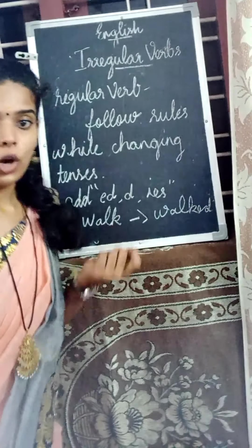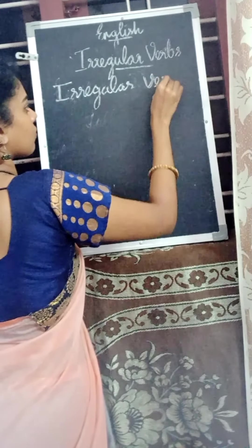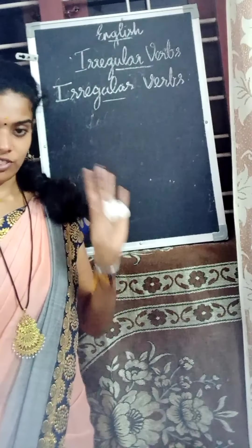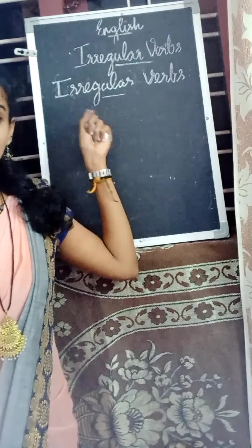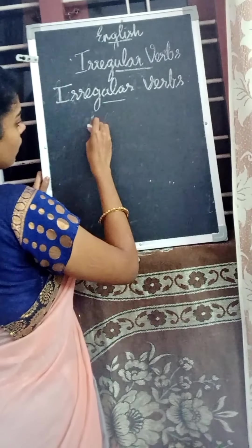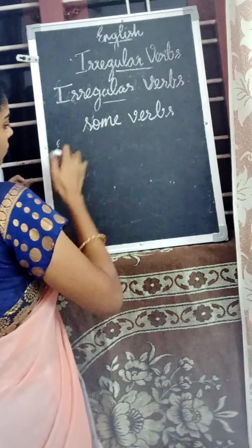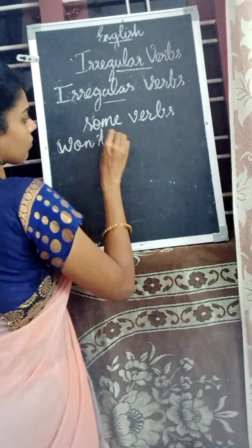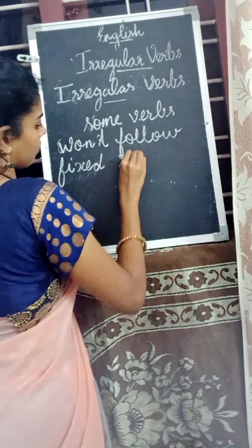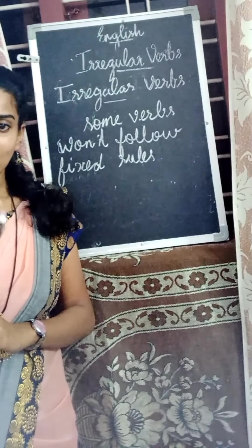For example: walk, talk. Some verbs won't follow the fixed rules. There are some verbs which won't follow the rules — they will change on their own. Verbs which won't follow the grammatical fixed rule are known as irregular verbs. Some verbs which won't follow the fixed rule are known as irregular verbs.